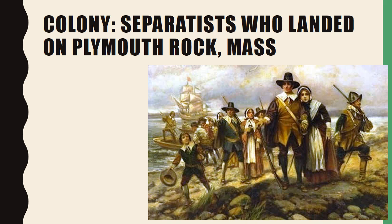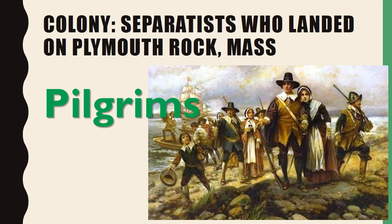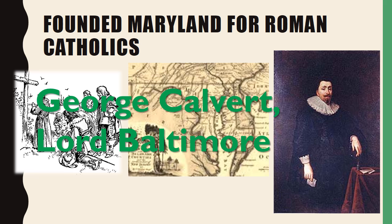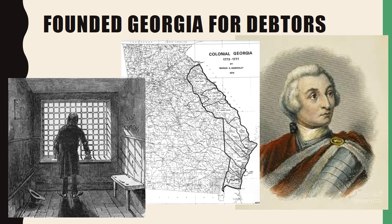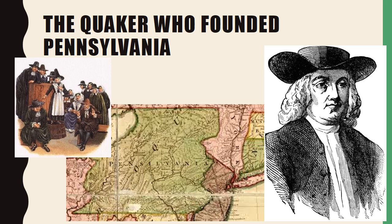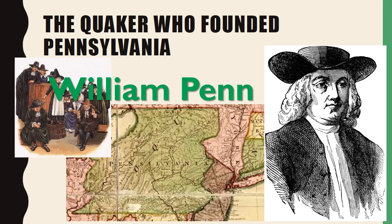Part one asks: what colony had the separatists who landed on Plymouth Rock in Massachusetts? The answer would be the Pilgrims. Who founded Maryland for Roman Catholics? That would be George Calvert or Lord Baltimore. Who founded Georgia for debtors? That would be James Oglethorpe. Who was the Quaker who founded Pennsylvania? That would be William Penn.